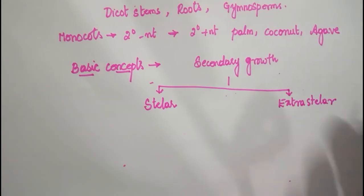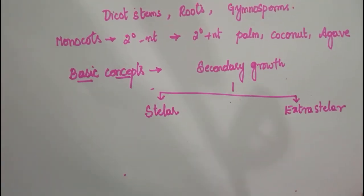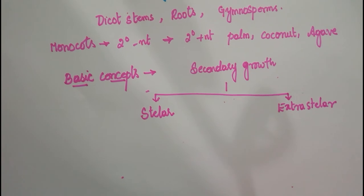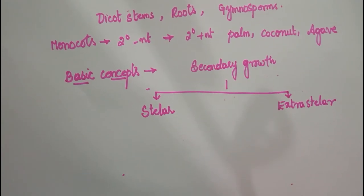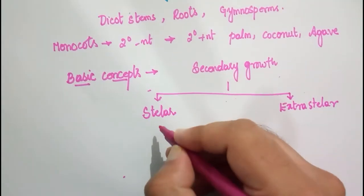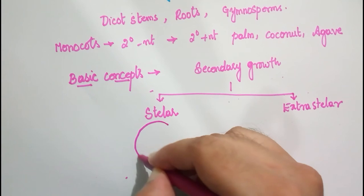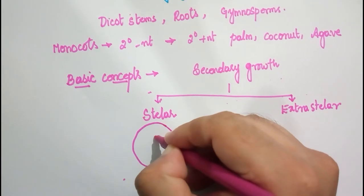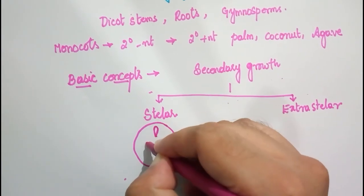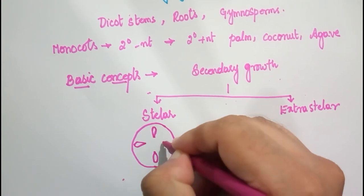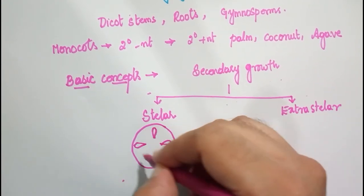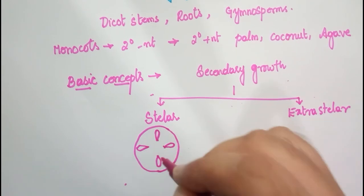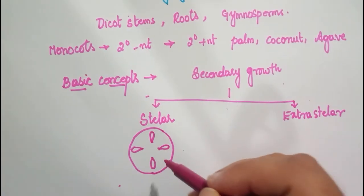To understand stelar secondary growth, we need to know what a stele is. All structures inner to the endodermis together form the stele. In dicots, the stele is called a eustele, where vascular bundles show a ring-shaped arrangement. In monocots, it is an atactostele, which is a scattered arrangement.